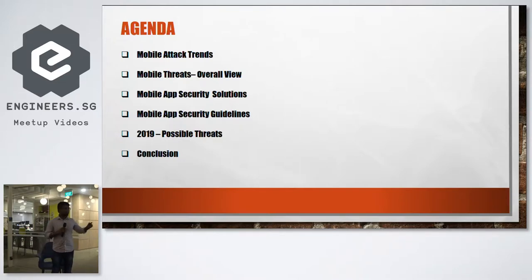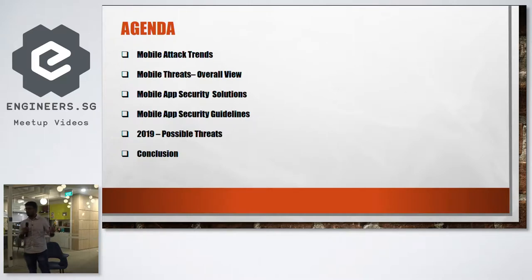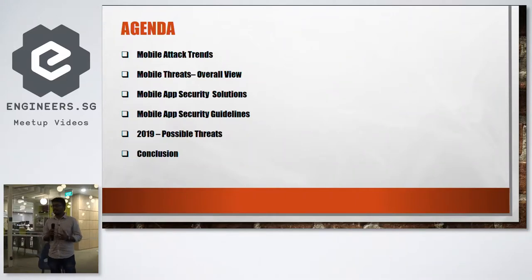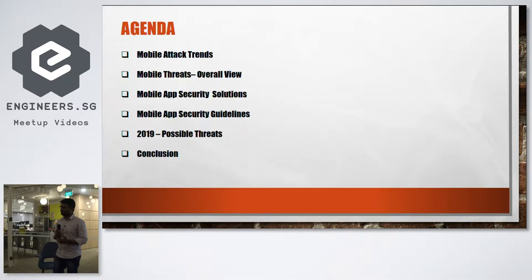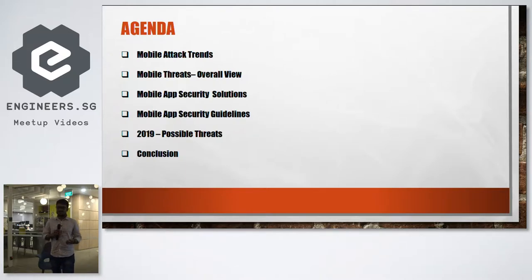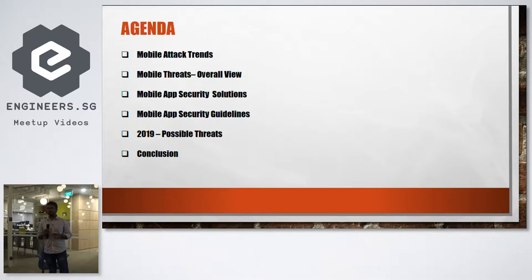By concluding these two things, we will propose solutions for mobile security. In non-functional testing, everything should have guidelines — for web app security there are separate guidelines, and for mobile app security there are separate guidelines. Accessibility testing also has guidelines. Everything should follow guidelines. For mobile security, we will discuss what are the predominantly accepted guidelines throughout the world.